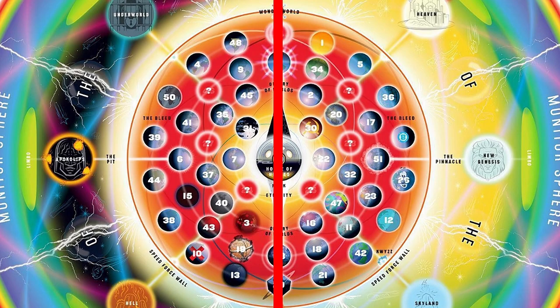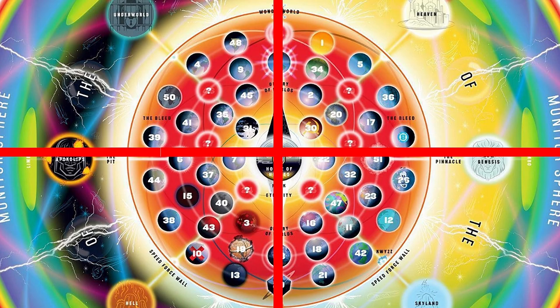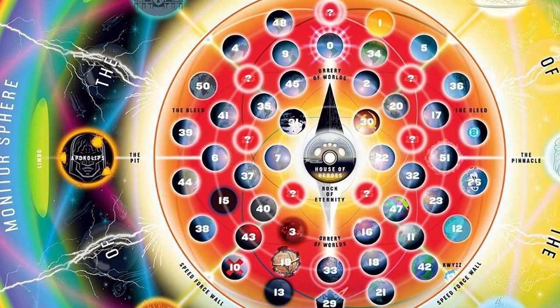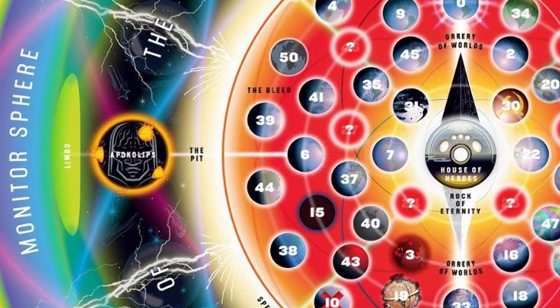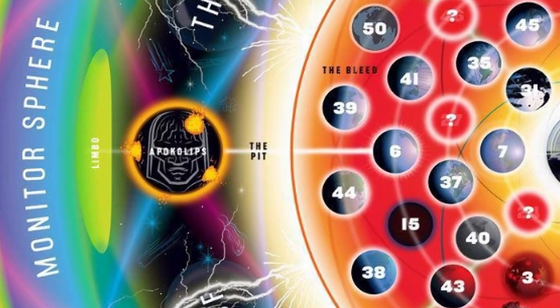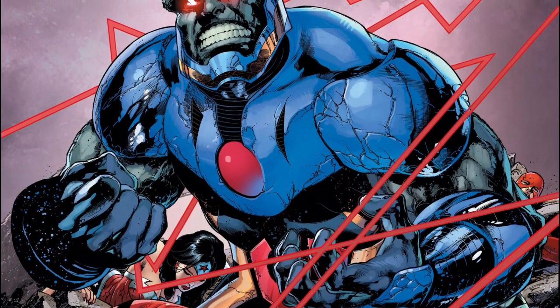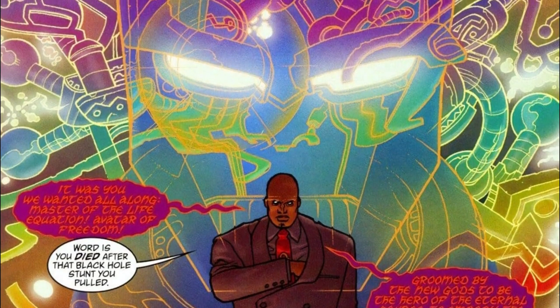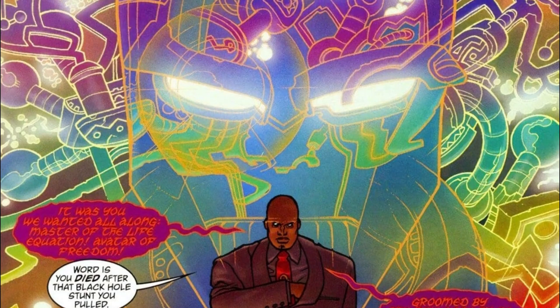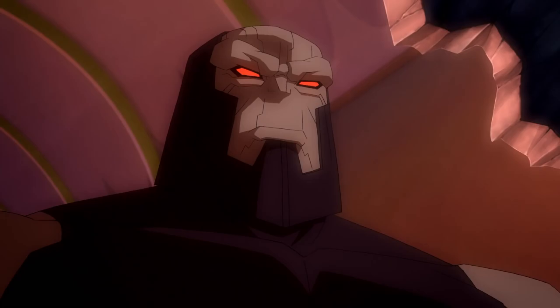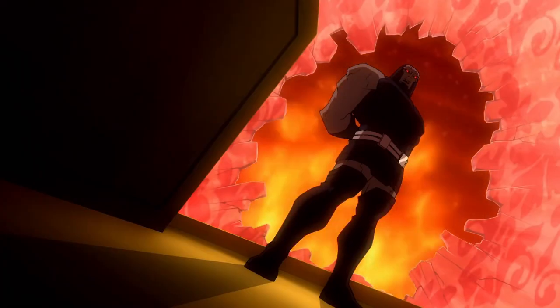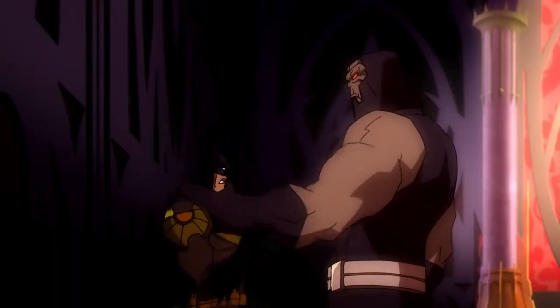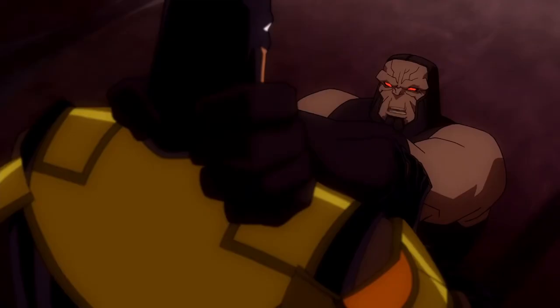One of the most renowned realms within the Sphere of Gods is Apokolips, the abode of Darkseid and the New Gods. Darkseid, whom we commonly encounter in the comics, is actually one of his many avatars — his true form exists beyond the confines of the multiverse, surpassing the power of any member of the Justice League. Apokolips itself is an infamously desolate world, plagued by crime and poverty, governed with an iron fist by Darkseid, who relentlessly seeks to expand his dominion across the multiverse.